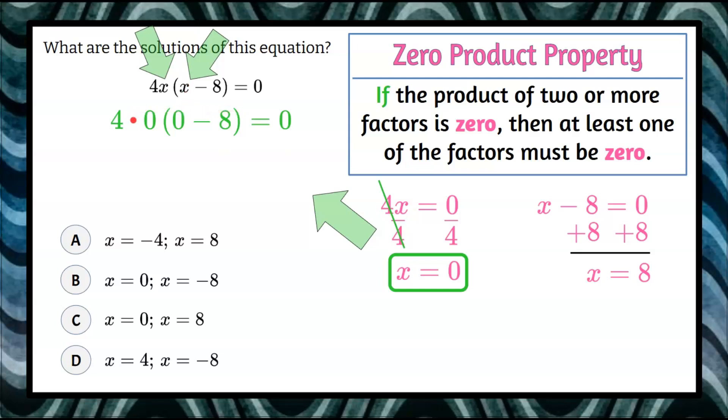4 times 0 is 0. 0 minus 8 is negative 8. 0 multiplied by negative 8 is 0. It checks: 0 equals 0, it's true. So x equals 0 is a solution of this quadratic equation.